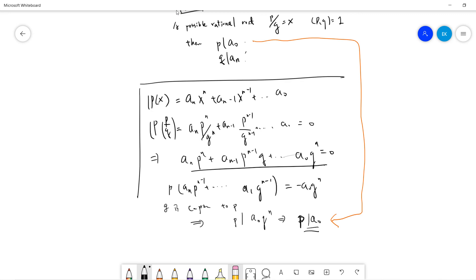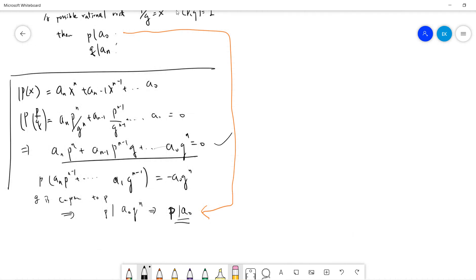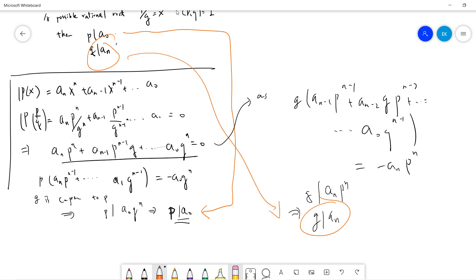So that's the first part. Let's talk about the next part. The next part is also trivial. Because you can write this equation as: q(an-1*p^(n-1) + an-2*q*p^(n-2) + ... + a0*q^(n-1)) = -an*p^n. And so now from this side, q divides an*p^n, but q is coprime to p, so q divides an. So that finishes the proof.